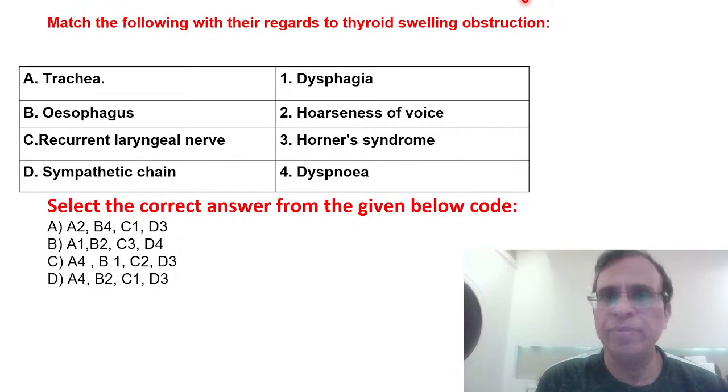It's cakewalk, everybody will be able to do this. Trachea blocked will cause dyspnea, difficulty in breathing. Esophagus blocked causes dysphagia. If the recurrent laryngeal nerve is blocked, it supplies the muscles of the larynx, so when the vocal cord cannot adduct properly it causes hoarseness of voice.